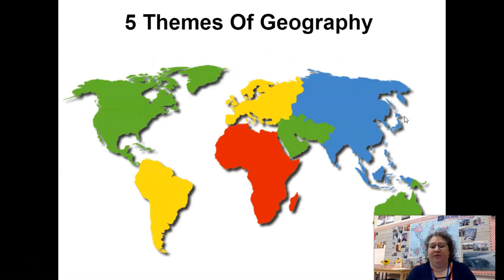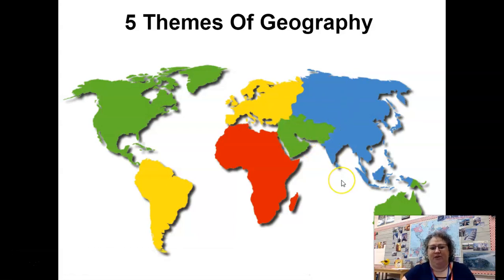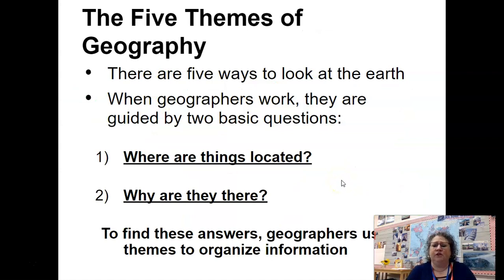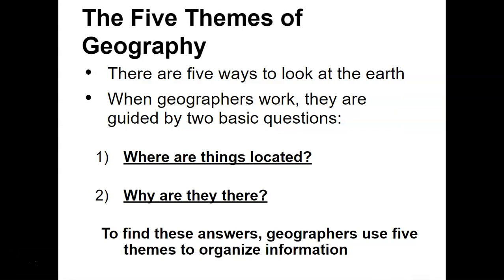We're going to start with looking at the five themes of geography. If you notice this map, hopefully when you see those colors you recognize mostly the seven continents. The exception is where they have the Middle East or Southwest Asia as a separate color, when in reality it's part of Asia. The five themes of geography are basically a way of looking at the earth, and geographers can ask one of these questions. They are ultimately guided by two questions: where are things located, and why are they there? They use five themes to organize. You're going to have a little quiz on the themes afterwards.